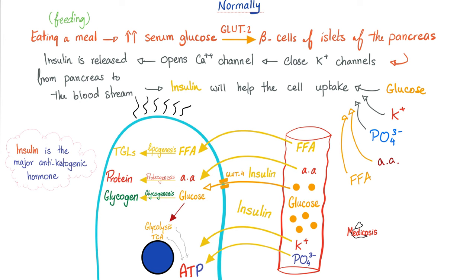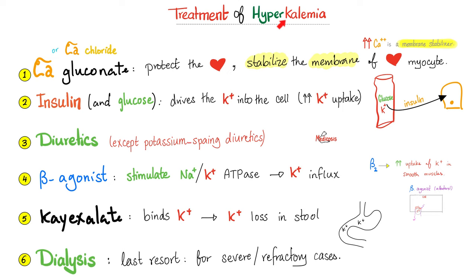With that in mind, let's talk about the treatment of hyperkalemia. First, protect the heart from arrhythmia — kalium problems equals cardiac problems. How? Stabilize the membrane of the cardiac myocyte. Calcium is a membrane stabilizer. Calcium is contra-excitability. You can think of it as two cations competing: the more calcium, the less sodium activity. Since sodium is responsible for depolarization and activation, with too much calcium you get less activation of the cardiac myocyte — fewer arrhythmias. Remember: calcium is contra-excitability.